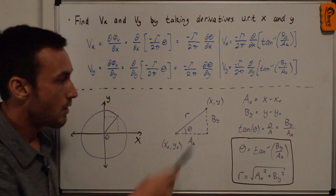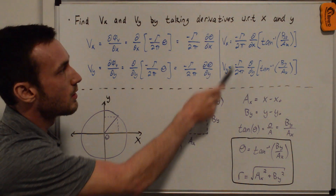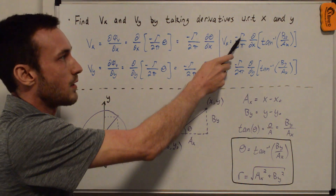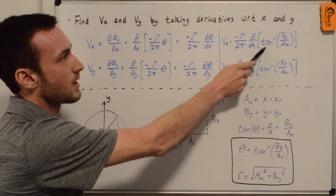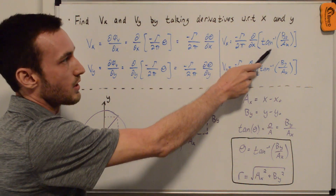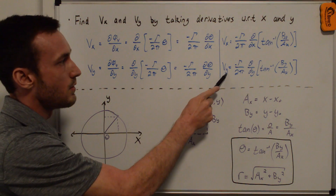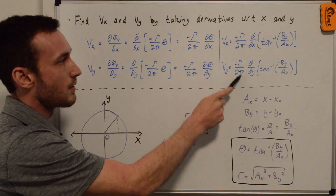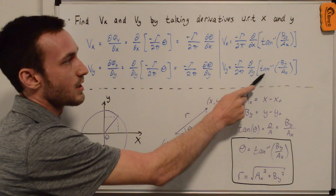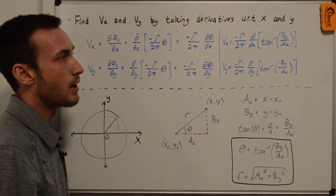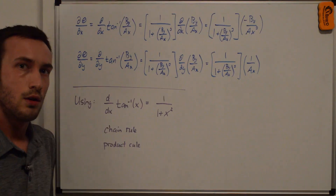Knowing theta now, we can plug that back into our expressions. For vx, we have negative gamma over 2 pi times d/dx of arctan(b_y / a_x). Similarly, vy equals negative gamma over 2 pi times d/dy of arctan(b_y / a_x). So now we need to evaluate these partial derivatives.